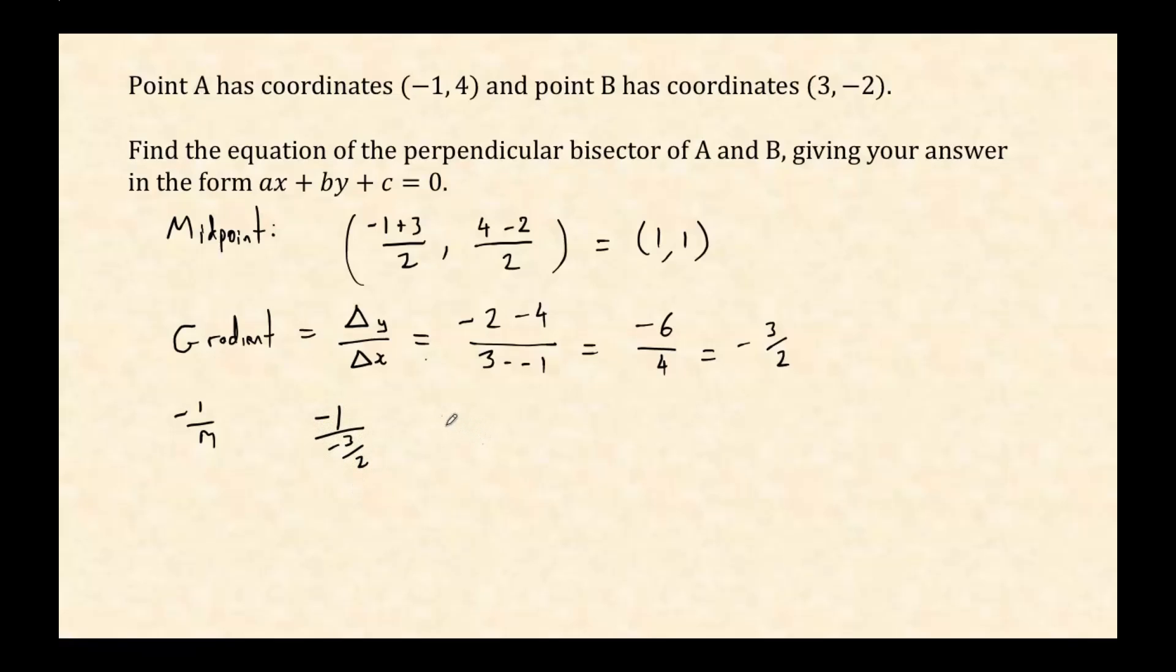Here's how I recommend you write this out if you're unsure. If you write -1 divided by -3/2, we can use the rules that we know about dividing fractions to say that's the same as -1 times by -2/3. Change the divide to a times and flip it round. Now it's easy. The negatives cancel and it's just 1 times 2/3, so 2/3.